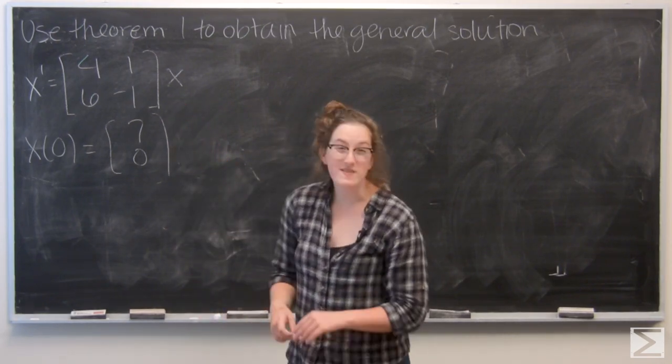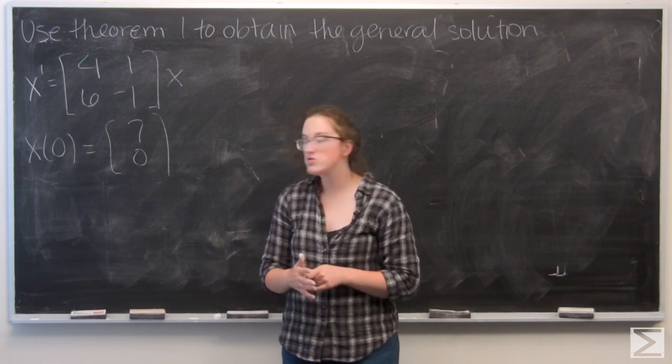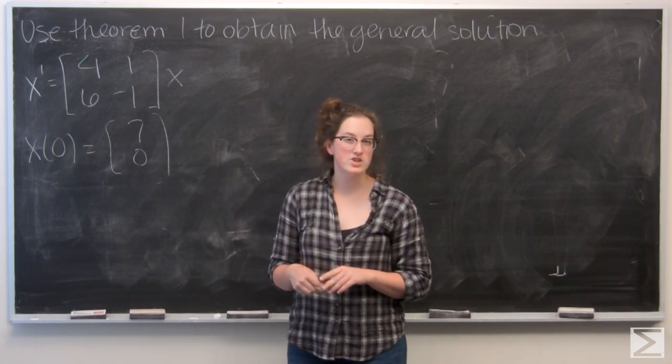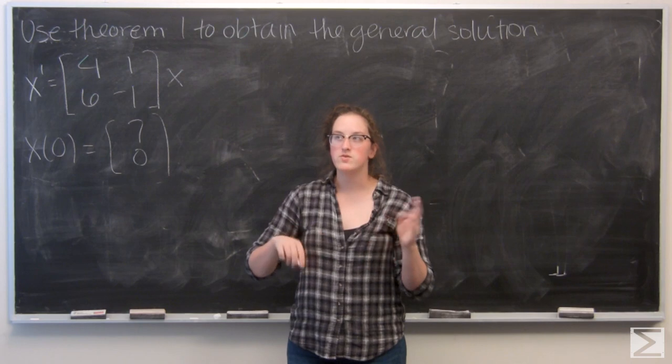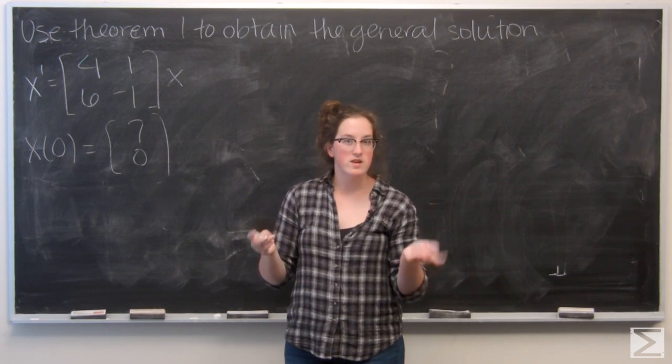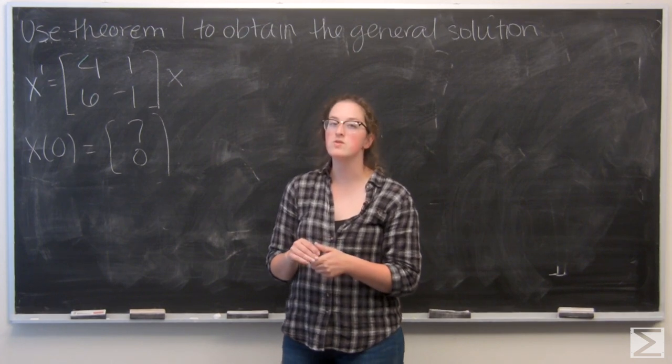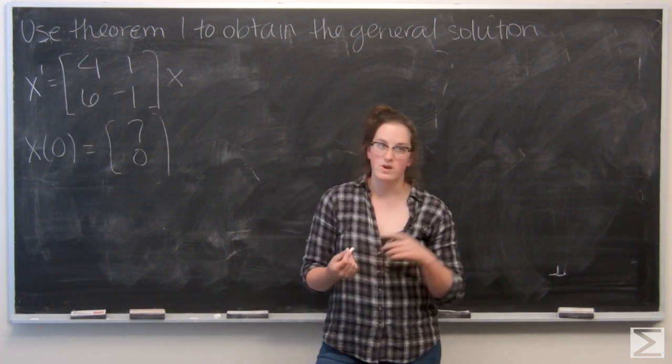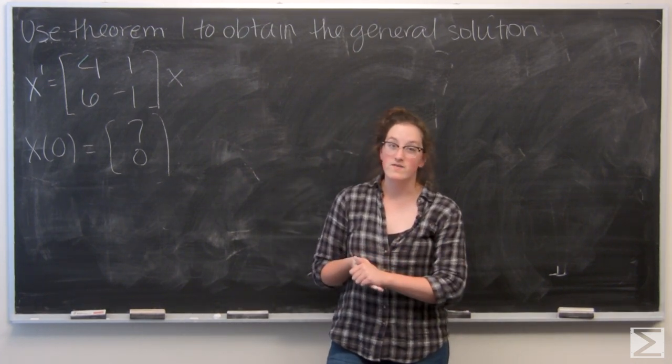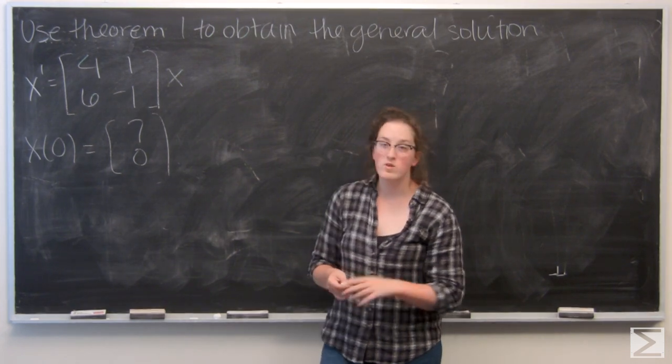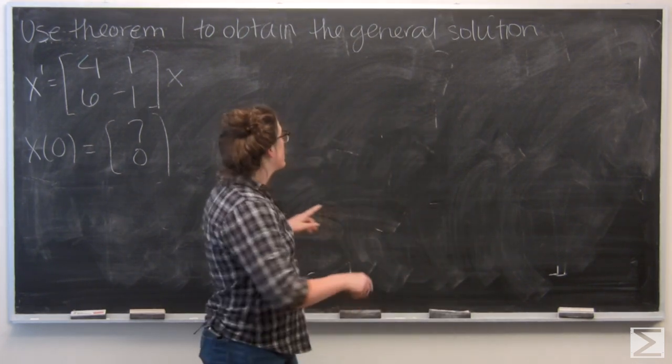Let's recall that Theorem 1 says that the solution x to the system is going to be a linear combination of e to the lambda 1t times v1 and e to the lambda 2t times v2, where lambda 1 and 2 are the eigenvalues of the matrix and v1 and v2 are their respective eigenvectors. Let me go ahead and write that down.